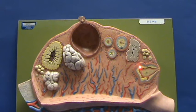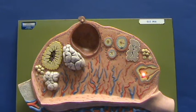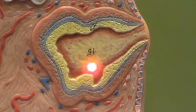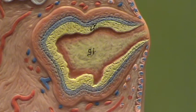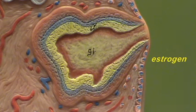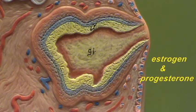After ovulation, the follicle is going to collapse and there's going to be some bleeding — it's called a hemorrhagic follicle. The red here depicts the bleeding. The granulosa cells undergo a change: in addition to estrogen, they're going to produce progesterone, and the estrogen and progesterone are going to support a pregnancy if it occurs.